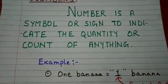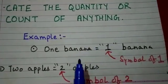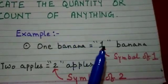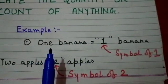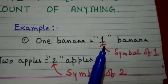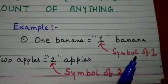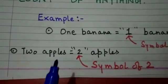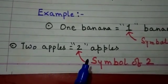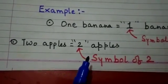For example, one banana means one. This one is the symbol of the word one. When we write it on paper, we use the symbol one to indicate one banana. In the same way, if we write two apples, we will write the symbol two to indicate the quantity of apples as two.